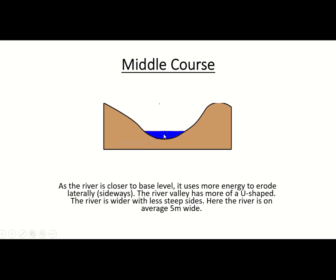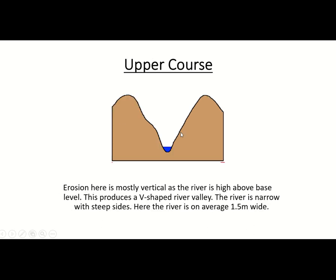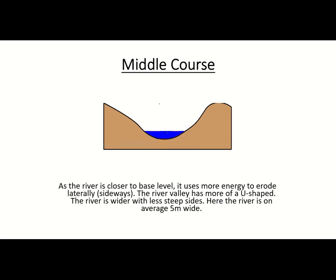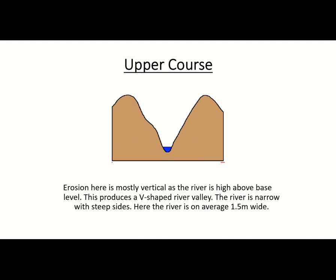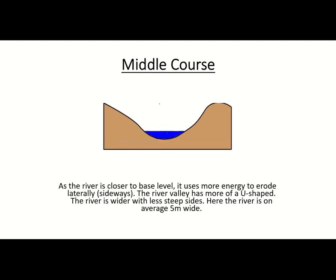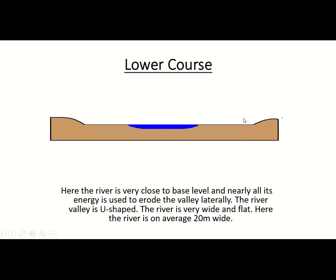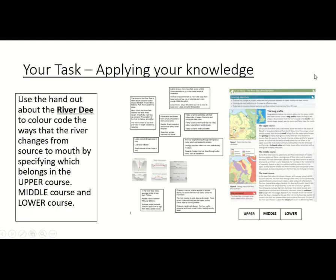In the middle course the river is about five meters wide on average and also deeper. Then in the lower course it's very flat and very wide — about 20 meters wide on average — because there's very little gravitational potential energy and you've got a meandering river moving left to right. You wouldn't even recognize this as a valley; it's essentially just a flat floodplain area. So the channel changes from very narrow and shallow in the upper course to wider and deeper in the middle course, to really wide in the lower course.